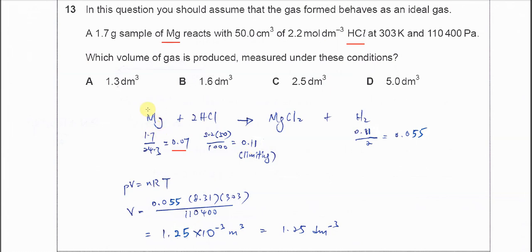Which means when we use 0.07 mole of magnesium, it's supposed to need 0.14 mole of HCl. But the HCl now is just 0.11, so we know that the limiting agent is the HCl. When we do the calculation we must base it on the limiting agent.